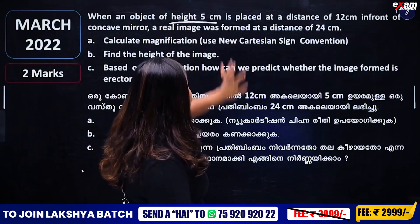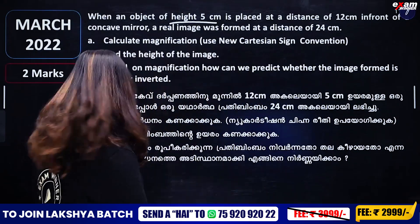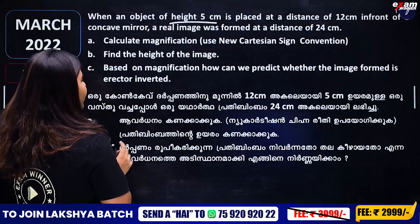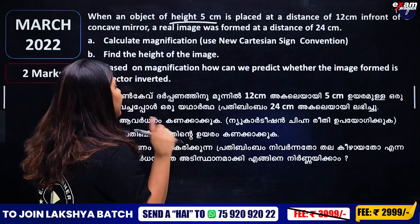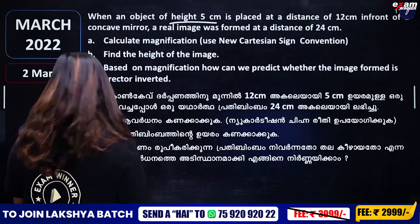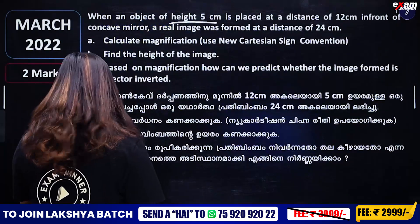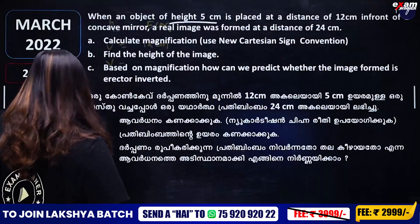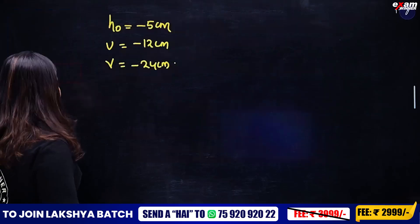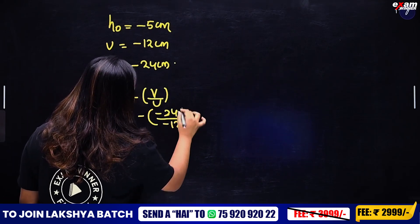When an object of height 5 cm is placed at a distance of 12 cm in front of a concave mirror, a real image was formed at a distance of 24 cm. The height of the object is 5 cm, object distance u is minus 12 cm, and image distance v is minus 24 cm. Calculate the magnification: minus of v by u, that is minus of minus 24 by minus 12, that is minus 2.